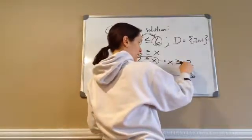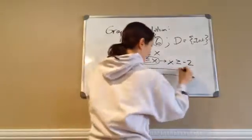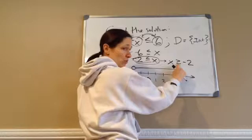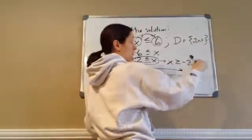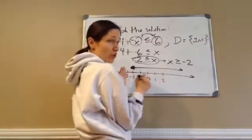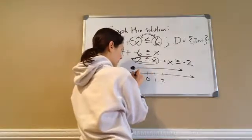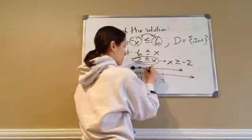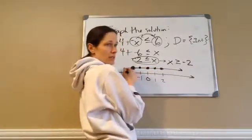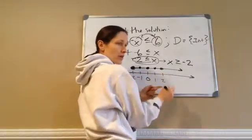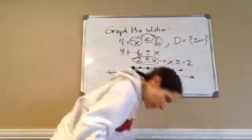So x is greater than negative 2, which goes this direction on the number line, and it's also equal to negative 2. But I'm not graphing all real numbers — I'm supposed to graph integers. So I'm just graphing the integers that are greater than or equal to negative 2, meaning I literally fill in dots at negative 2, negative 1, zero, and so on up the number line.